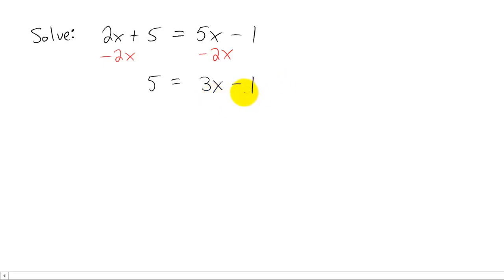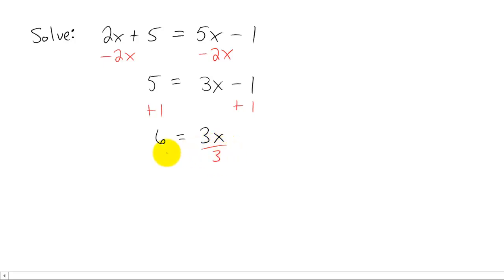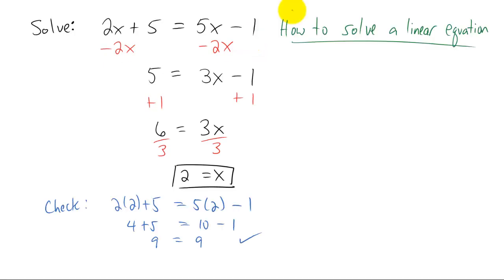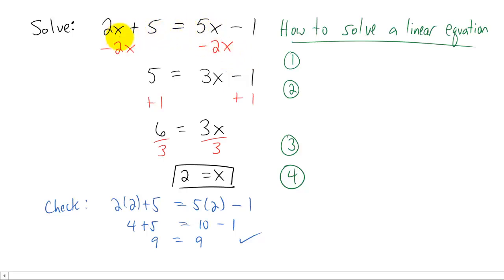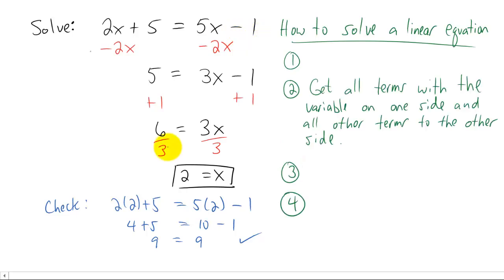Now we get all non-x terms to the other side. There's a 1 subtracted from the 3x, so we add 1 to both sides: 5 plus 1 gives us 6, and 3x minus 1 plus 1 leaves us with 3x. Now we have a number multiplying x that we want to isolate — we divide by that number. Dividing both sides by 3 gives us x equals 2. Plug x equals 2 back into the original equation to check.